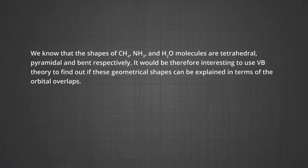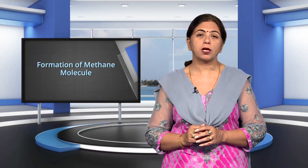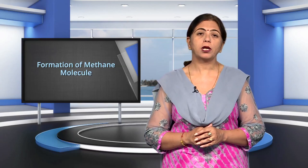We know that the shapes of methane, ammonia, and water molecules are tetrahedral, pyramidal, and bent respectively. It would be interesting to use valence bond theory to find out if these geometrical shapes can be explained in terms of orbital overlaps. Let us first consider the formation of methane. The electronic configuration of carbon (atomic number 6) in its ground state is [He] 2S² 2P², which in the excited state becomes [He] 2S¹ 2P³. The energy required for this excitation is compensated by the release of energy due to overlap between the orbitals of carbon and hydrogen.